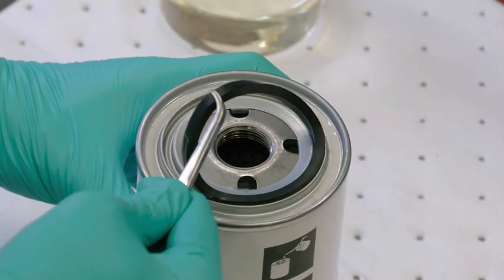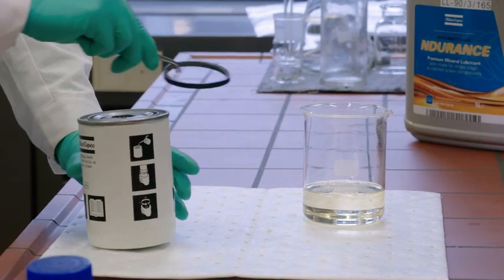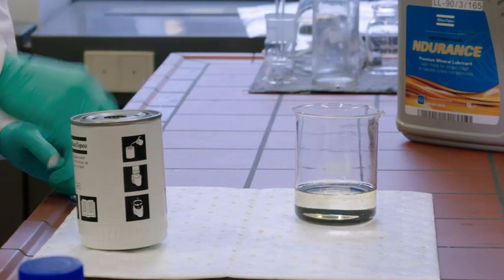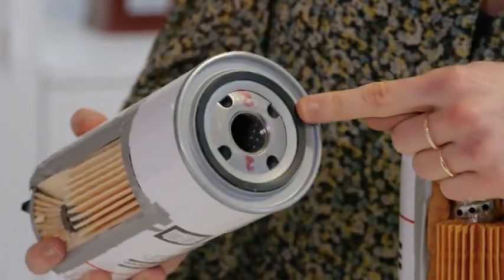A perfect fit of the seal onto the instrument block prevents unfiltered oil from getting through. Its high-quality rubber material withstands the high temperatures and pressures it's exposed to.